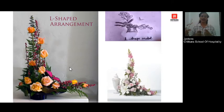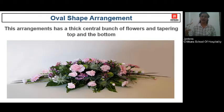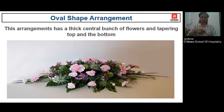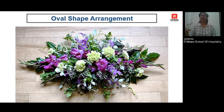Next is the L shape — this will have an L shape in the structure. It will be like this, or it can be the other way down, to give a proper L-shape plant arrangement. Next is the oval shape — if you look at the arrangement from the top, it will give you an oval structure. It will have a thick bunch at the center and it goes narrower at both ends. This is another example of the oval shape arrangement.